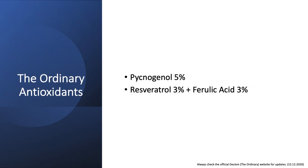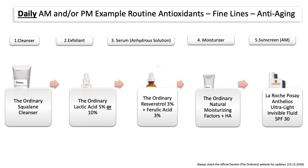When it comes to The Ordinary antioxidants, EUK is special, but you can still use lactic acid in combination with pycnogenol, as well as resveratrol and ferulic acid. Here is an example routine on how you can combine them. It's important to keep formulations in mind—go from the thinnest to the thickest texture when layering. This is how you can set up your skincare routine when using pycnogenol or resveratrol.